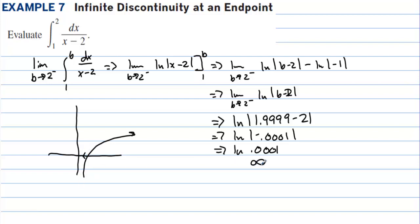Looking at the graph of natural log, as x gets closer and closer to 0, the graph shoots down to negative infinity. So this evaluates to negative infinity, meaning this integral diverges.